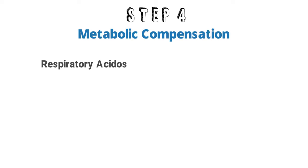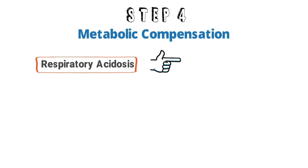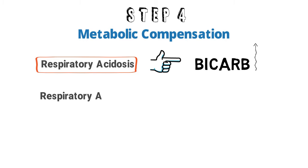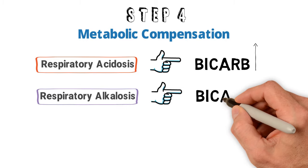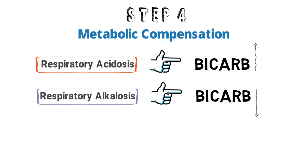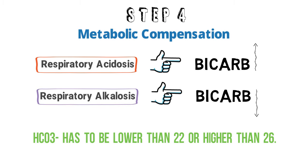Step 4: Determine compensation. When we have respiratory acidosis, the body will try to compensate by increasing the amount of bicarb in our system. Bicarb is a base, so one of its functions is to try to neutralize the acid that is causing the problem. When we have respiratory alkalosis, it is going to do the opposite by decreasing the amount of bicarb. For us to conclude that there is compensation, the increase or decrease of bicarb has to go outside the normal range — in other words, it has to be lower than 22 or higher than 26. If the bicarb is still within the normal limits, you can conclude that there is no compensation going on.